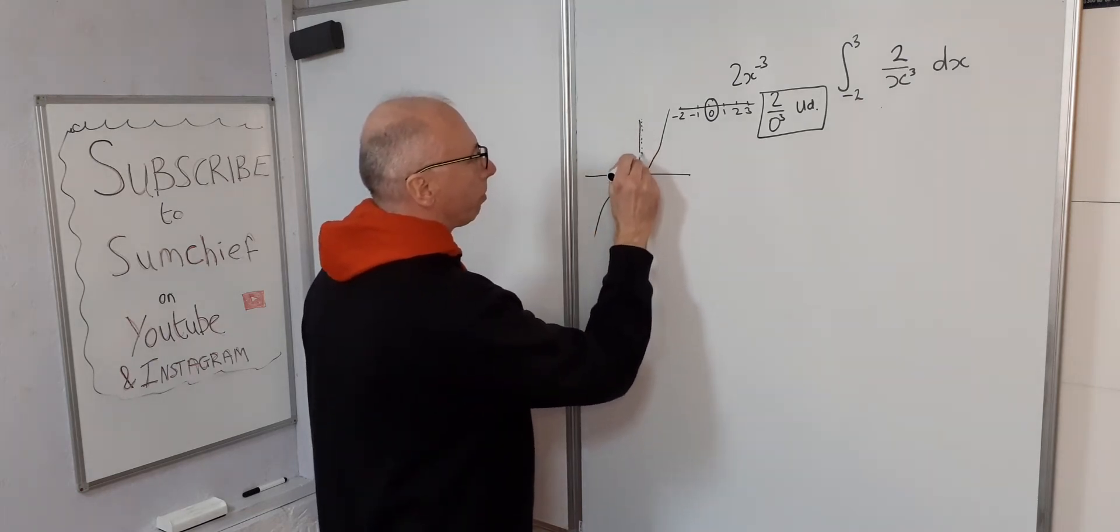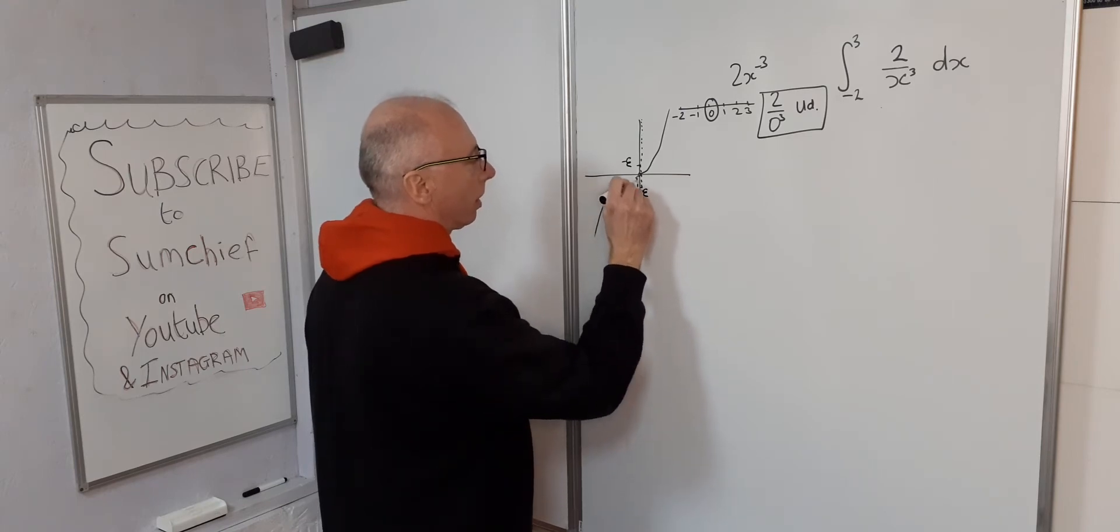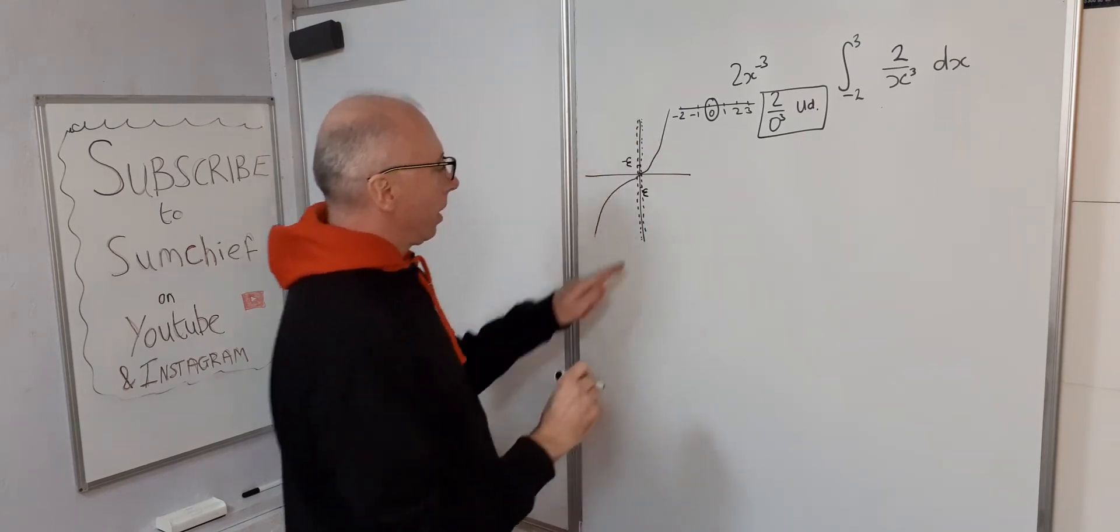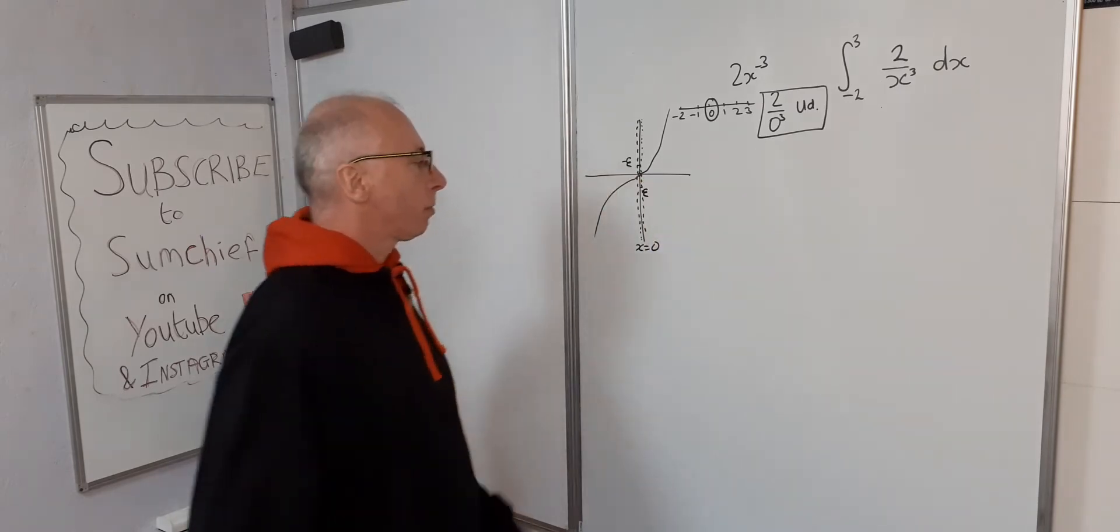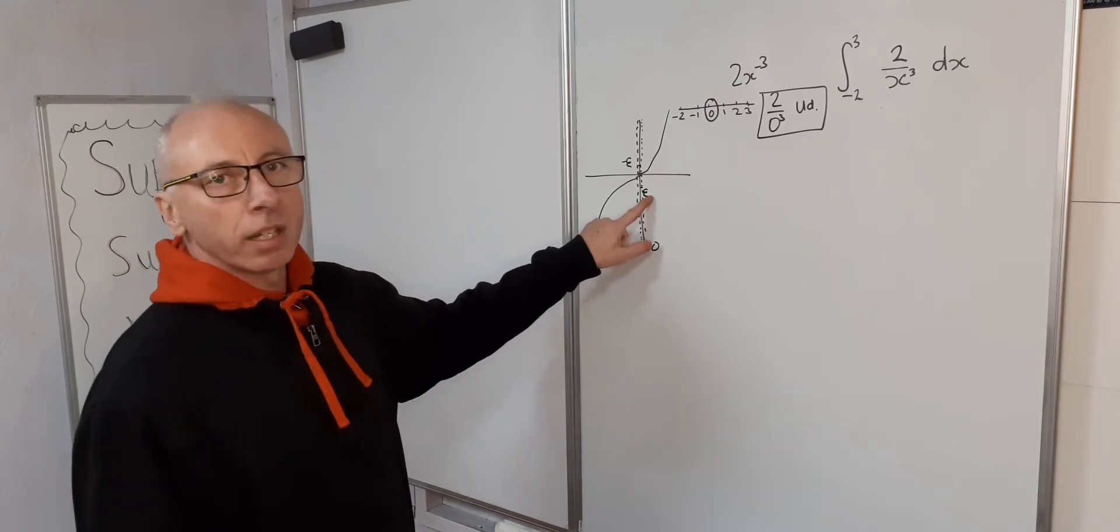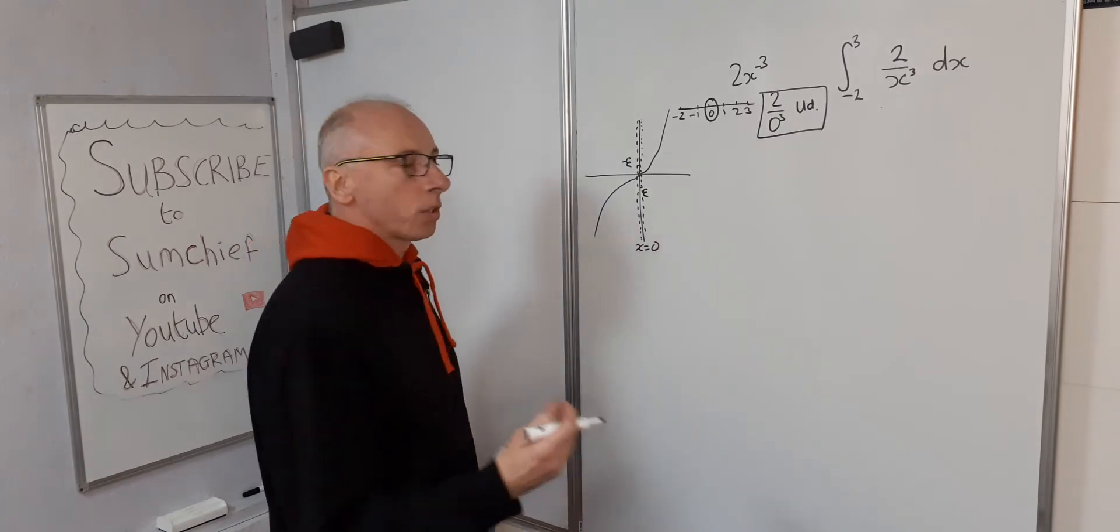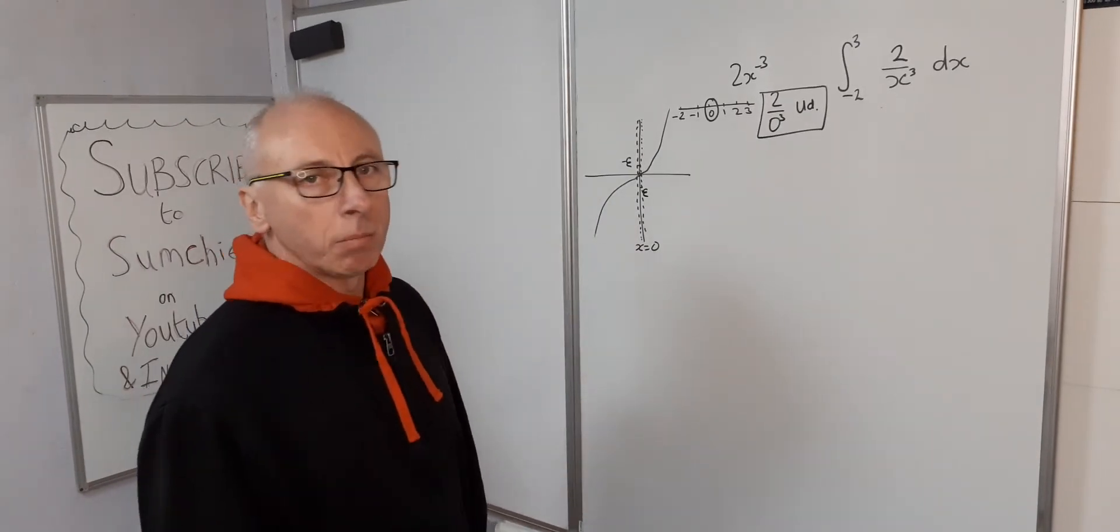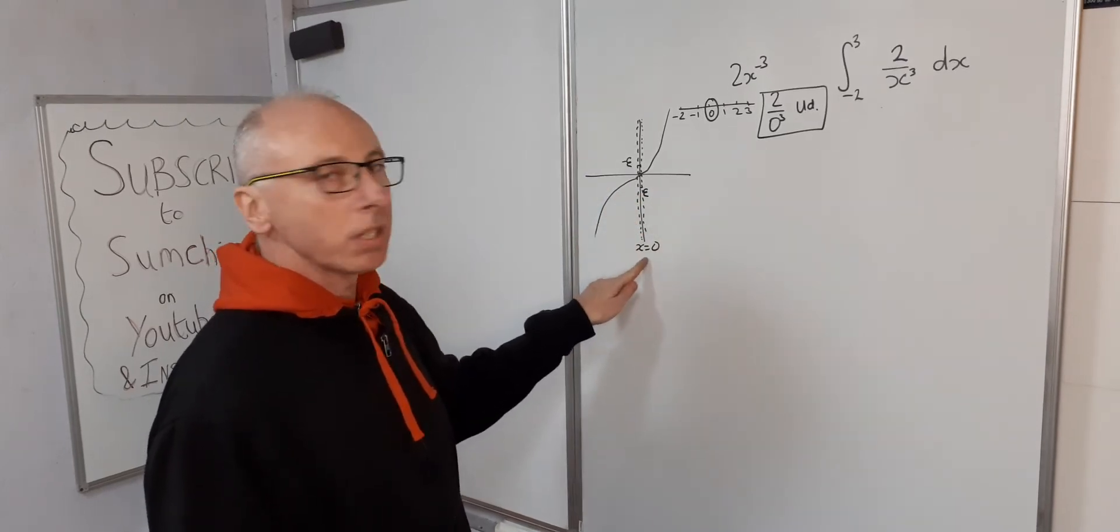So we're going to make this graph disappear here somewhere like that, and this center bit here where x equals zero to this point, we're going to completely ignore that. Epsilon here is an infinitely small value, so it can be minus 1 over a thousand, minus 1 over 10,000, just a very tiny amount, just enough to miss out zero.